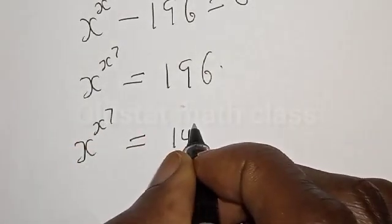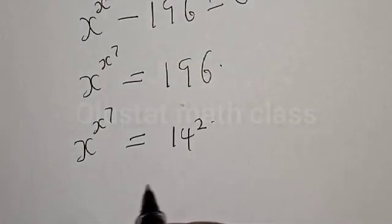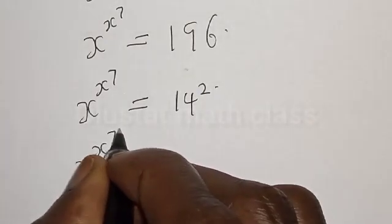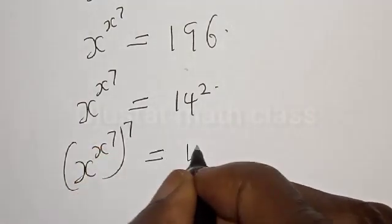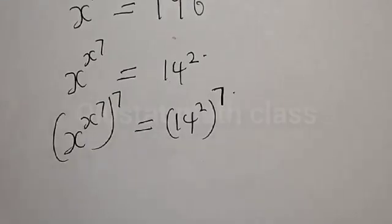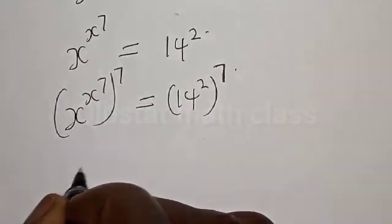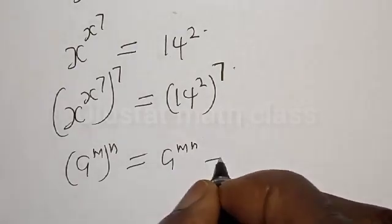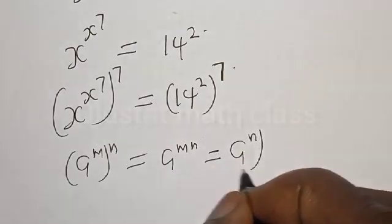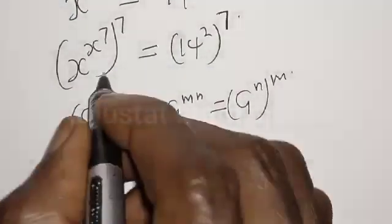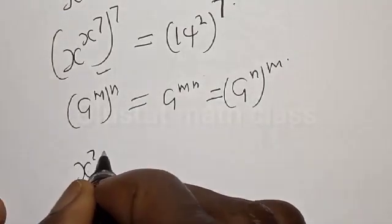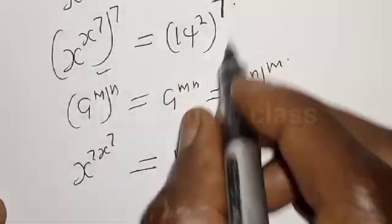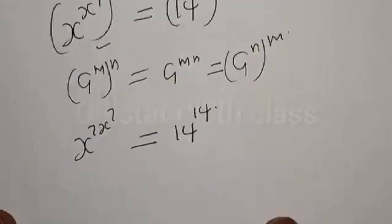s raised to power 7 is equal to 196, which is 14 squared. Now let's multiply everything by raised to power 7. That is, we have s raised to power s raised to power 7, multiplied by raised to power 7, is equal to 14 squared multiplied by the power of 7. Remember, if we have a raised to power m raised to power n, that is the same as a raised to power n raised to power m. Our equation becomes s raised to power 7 times s raised to power 7, is equal to 14 raised to power 7 times 2.